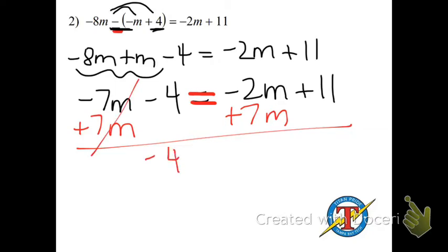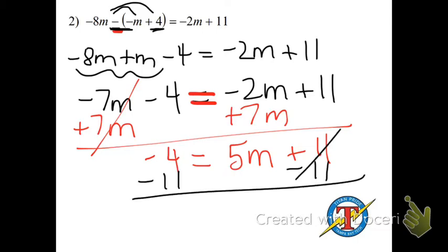Bring down my negative 4. Bring down my equals. Negative 2 plus 7 is 5m. And bring down the plus 11. Okay? Focus on the variable. Get that 5m by itself. So subtract 11 on both sides. And now I have 5m equals. Signs are the same, so you add negative 15.